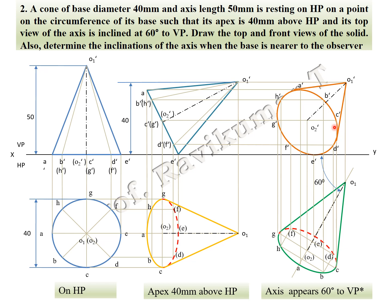Cones are very simple problems, easy to solve compared to prisms. The key logic: if the word 'generator' is given in the problem, it is a locus problem and the generator is placed on the XY line. Here, the circumference of its base such that the apex is 40 mm from HP — O is the apex, 40 mm from HP. This completes the cone problem. Thank you.